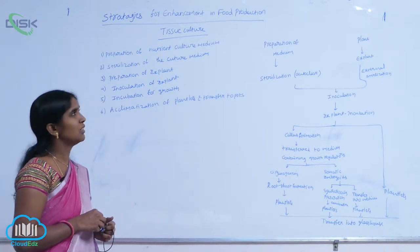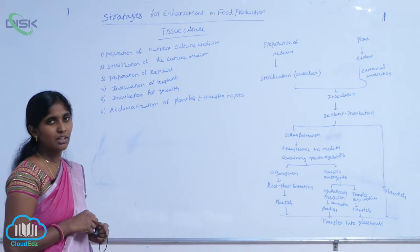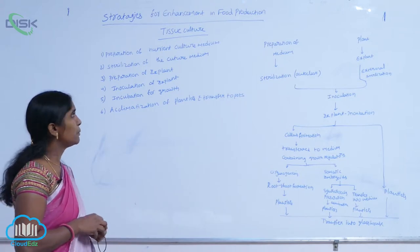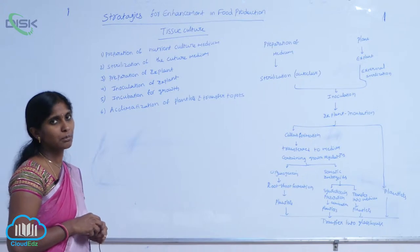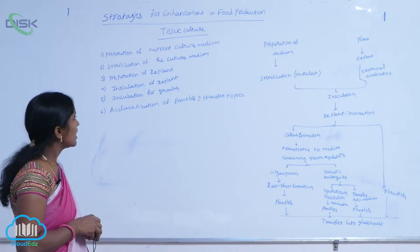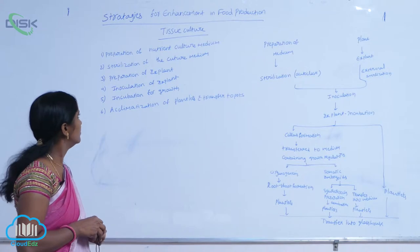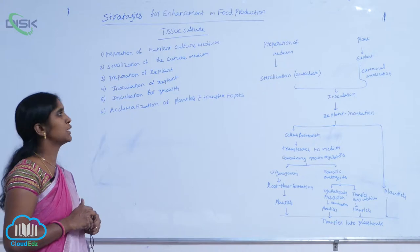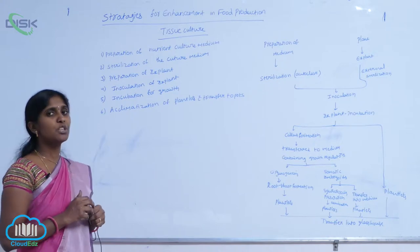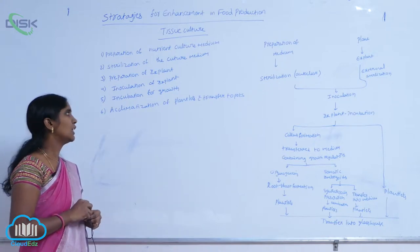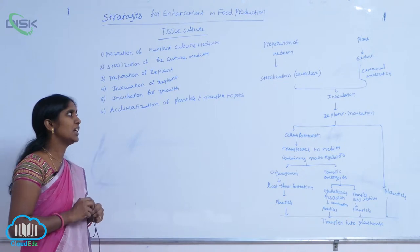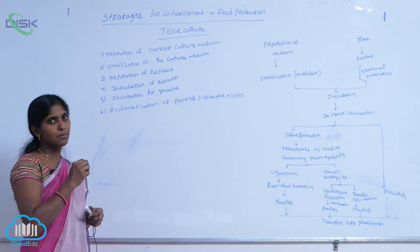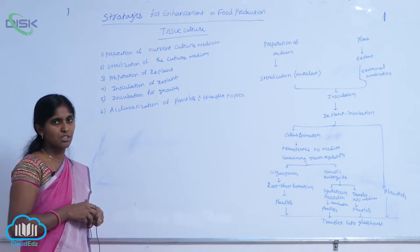The procedure for tissue culture includes many steps: first, preparation of nutrient culture medium; sterilization of the culture medium; preparation of explant; inoculation of explant; incubation for growth; acclimatization of plantlets and transfer to pots. These are the steps included in the tissue culture procedure.